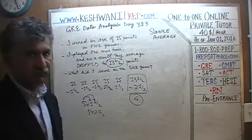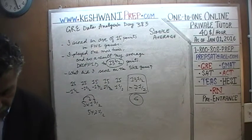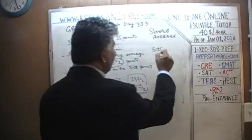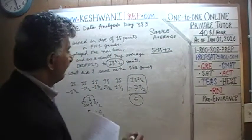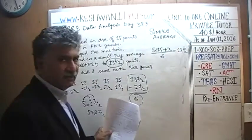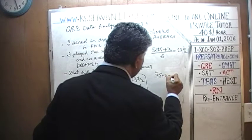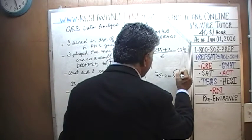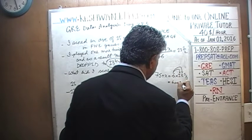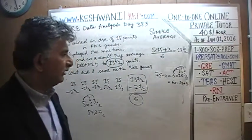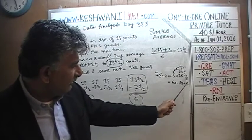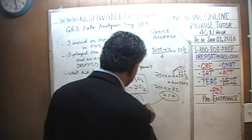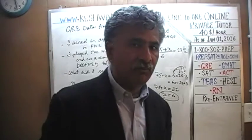He must have scored 6 points in the last game. For the algebraic approach, the setup is the same: 75 plus X equals 6 times 13 and a half. Six times 13 and a half: 6 times 10 is 60, 6 times 3 is 18, and six halves is 3, giving 81. So 75 plus X equals 81, and of course X equals 6.